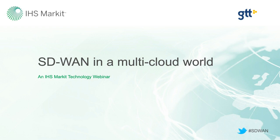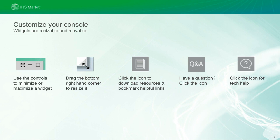Before we get started, I want to highlight some of the features available on the webinar console. The console is completely customizable — you can open, close, move, or resize any of the windows on your screen. At the bottom of your console, you'll see a number of application widgets with additional features. The resource list widget is where you'll find additional material about our topic, including the downloadable slide deck and other valuable resources, including a special report authored by our analyst, Cliff Grossner. We're using the hashtag SDWAN for Twitter interaction.